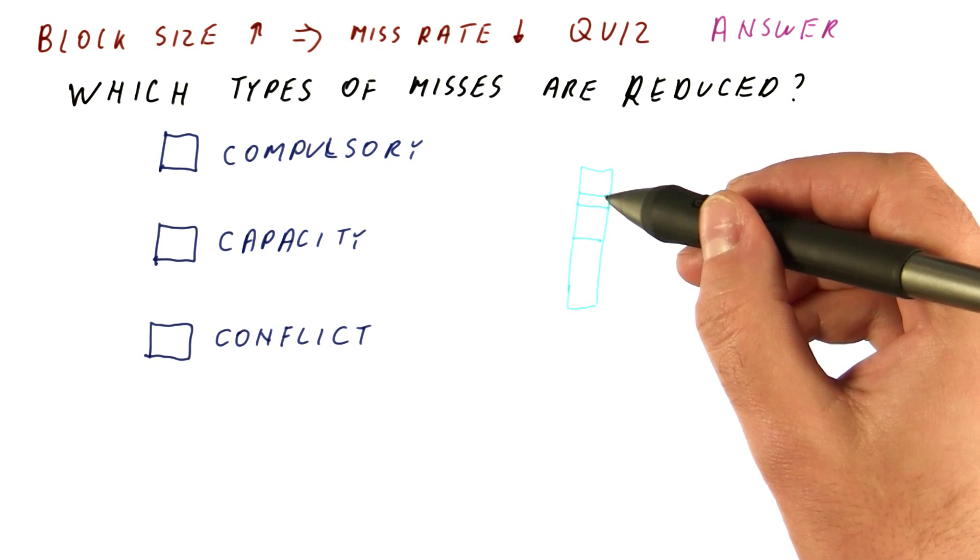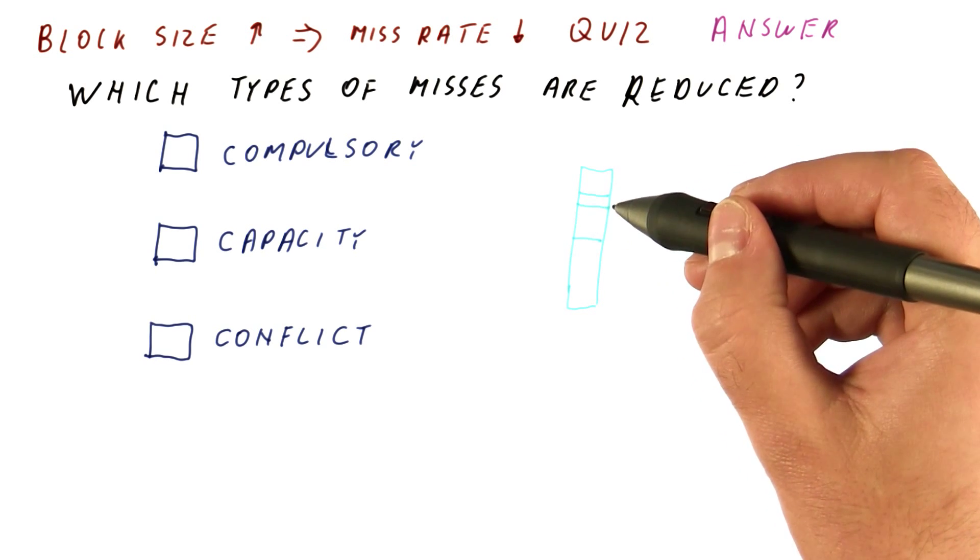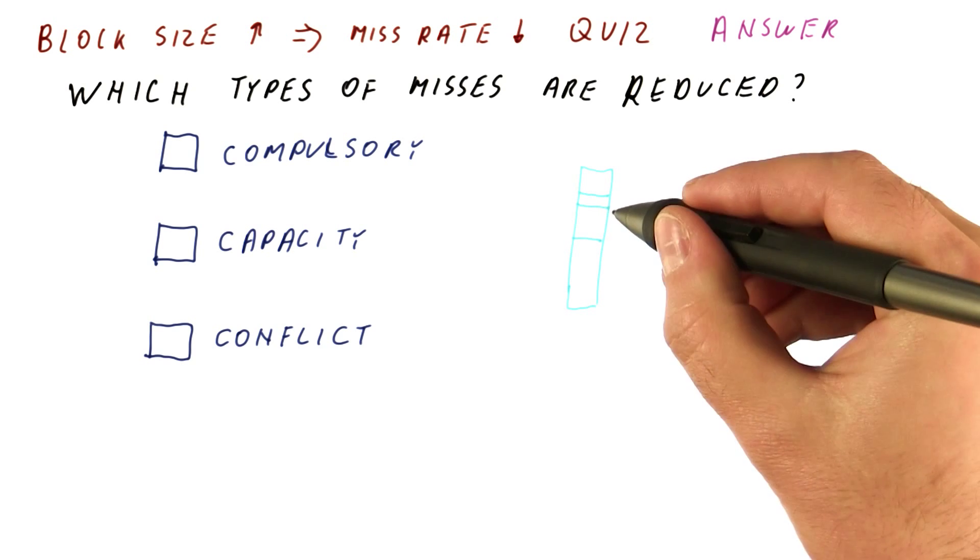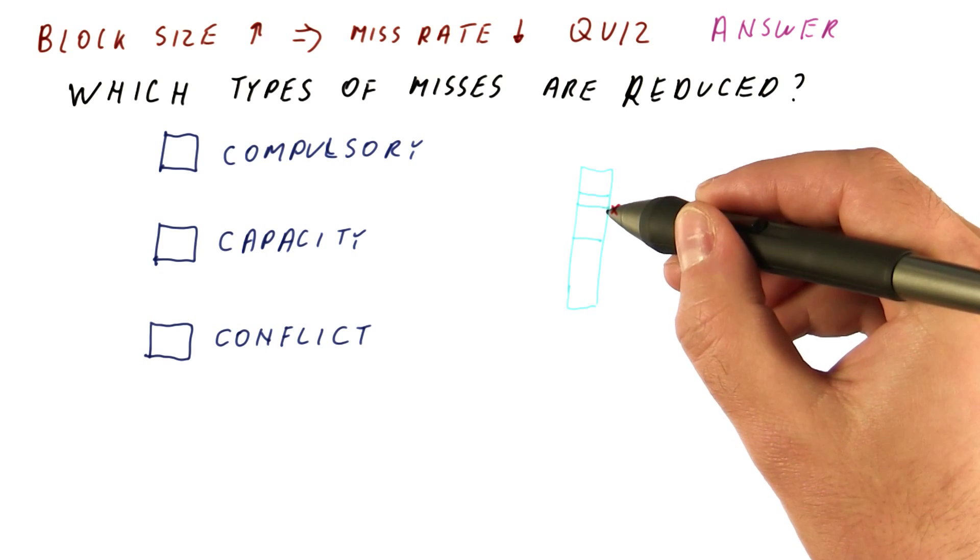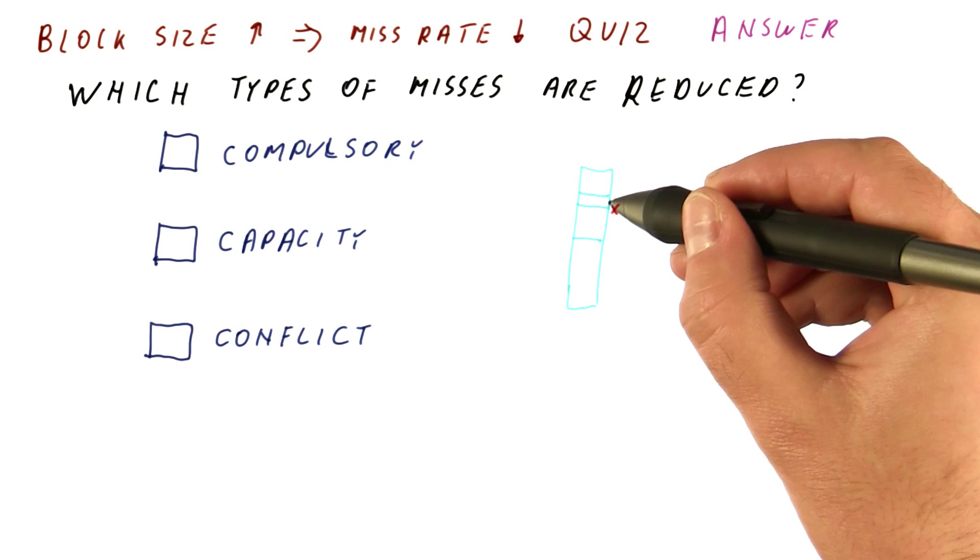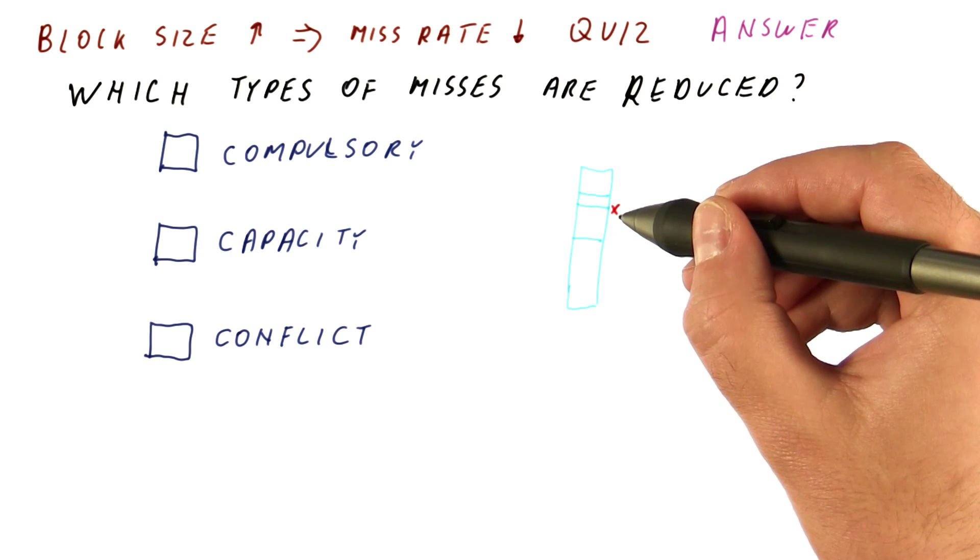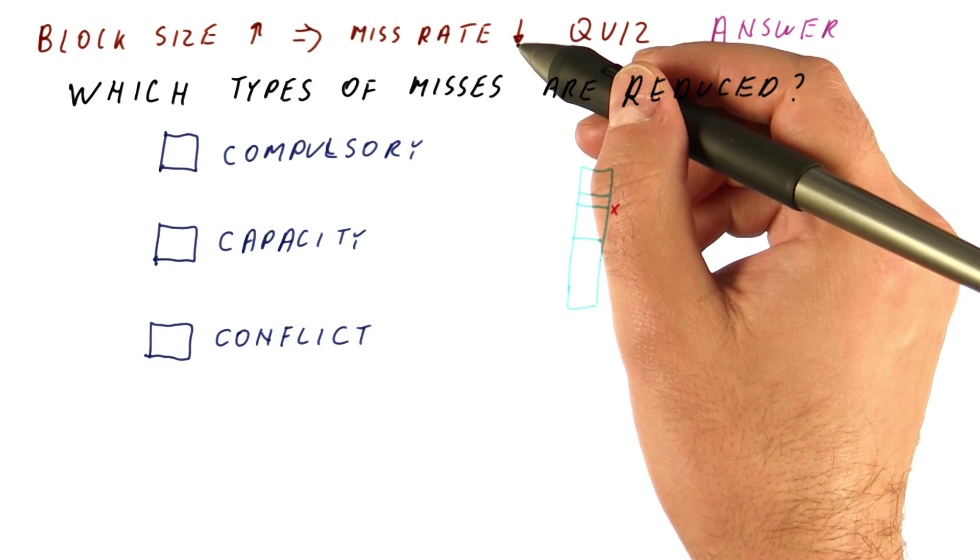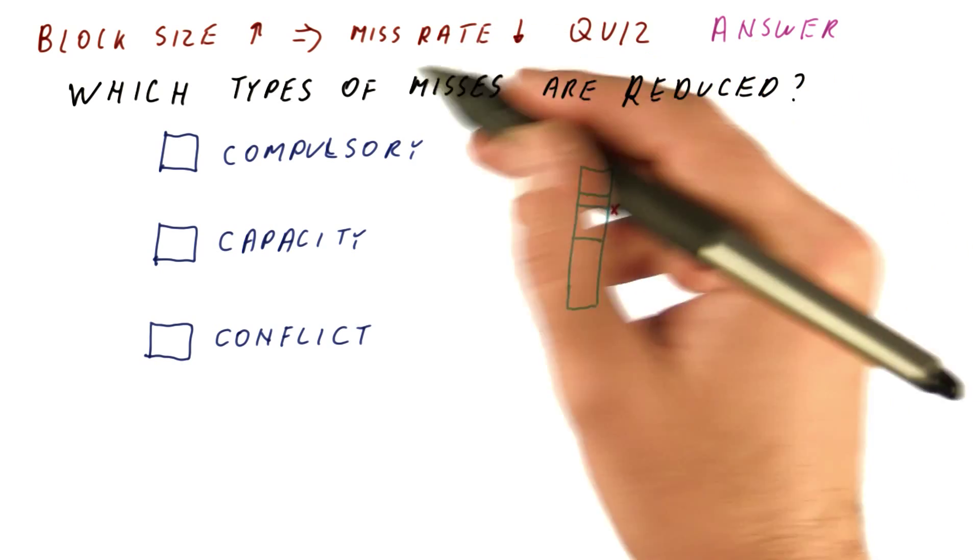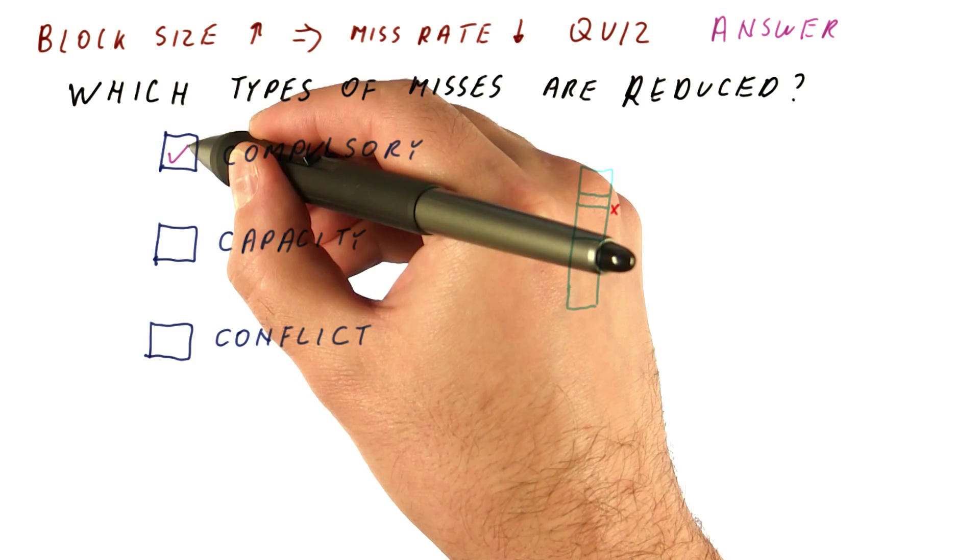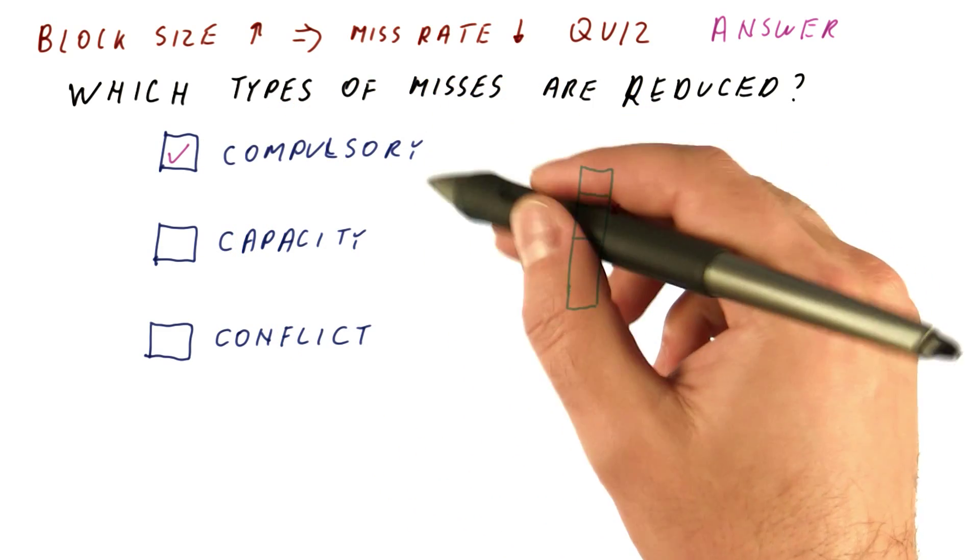If the cache line size was twice what it is now, then the second one would not have been a miss, because when we fetch the first one, the second one would have also been in the same cache block. So as you can see, the increase in block size, assuming there is enough locality, will result in a reduction in compulsory misses.